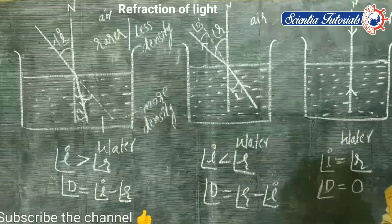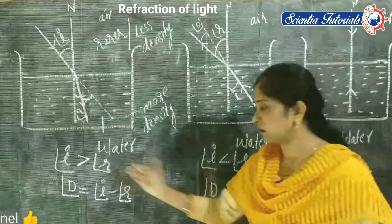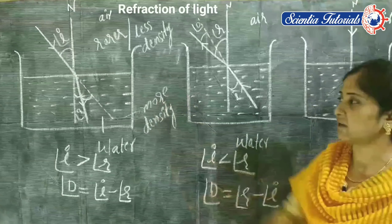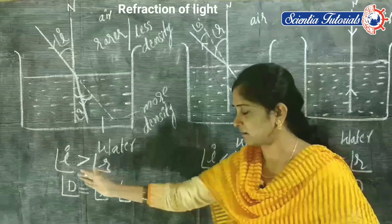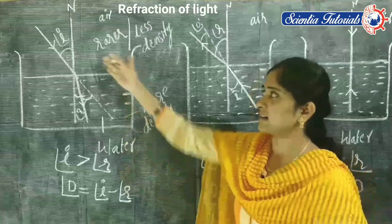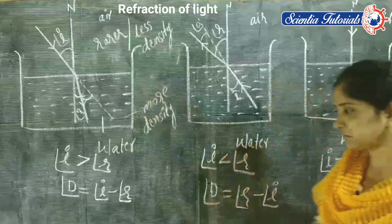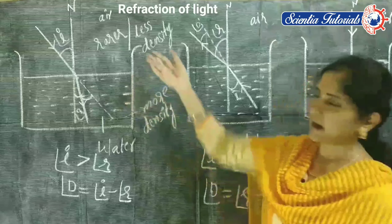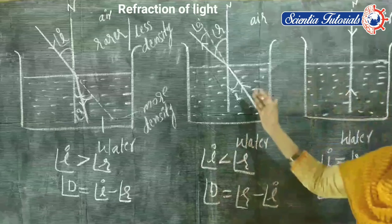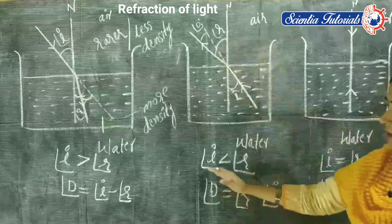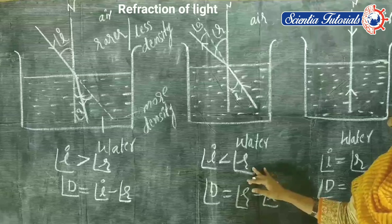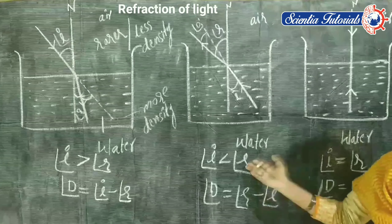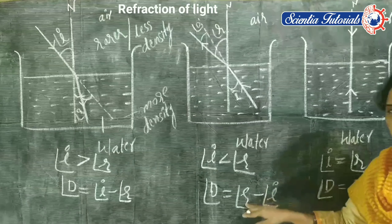These three conditions are important for examination-oriented problems. To summarize: when light travels from a rarer medium to a denser medium, angle of incidence is greater than angle of refraction, and angle of deviation equals angle of incidence minus angle of refraction. When light travels from a denser medium to a rarer medium, angle of incidence is less than angle of refraction, and angle of deviation equals angle of refraction minus angle of incidence — subtracting the lesser from the greater.